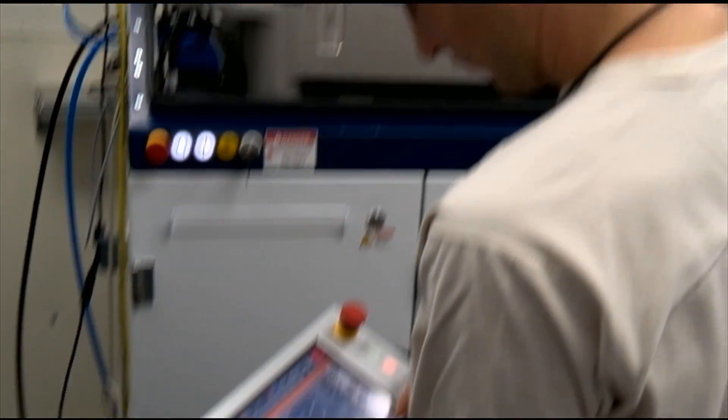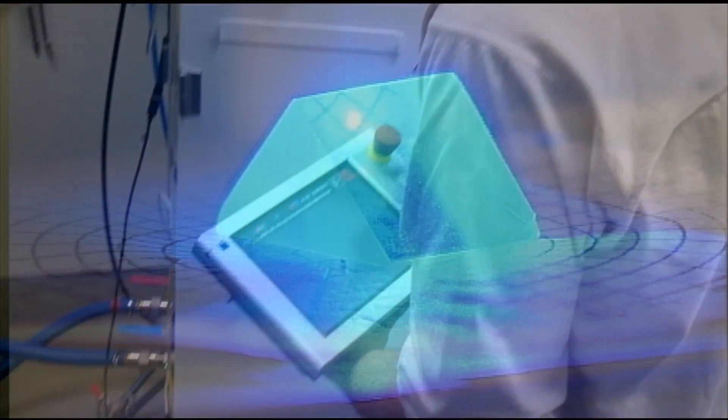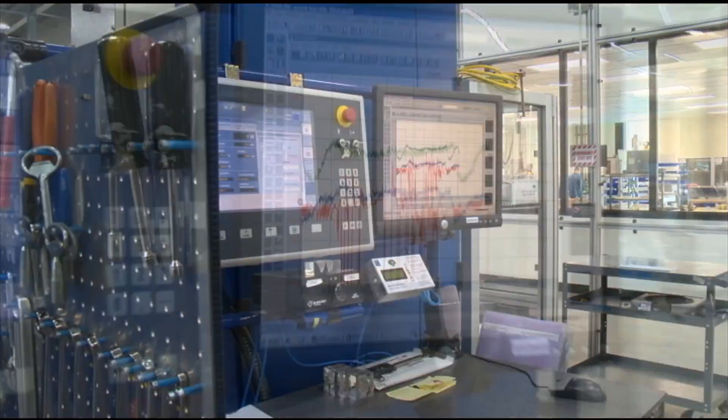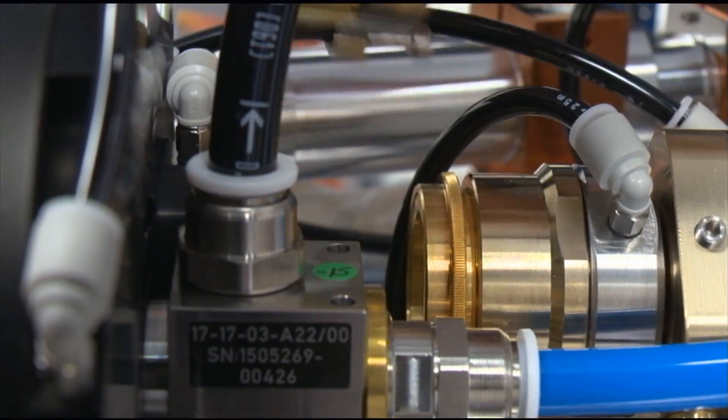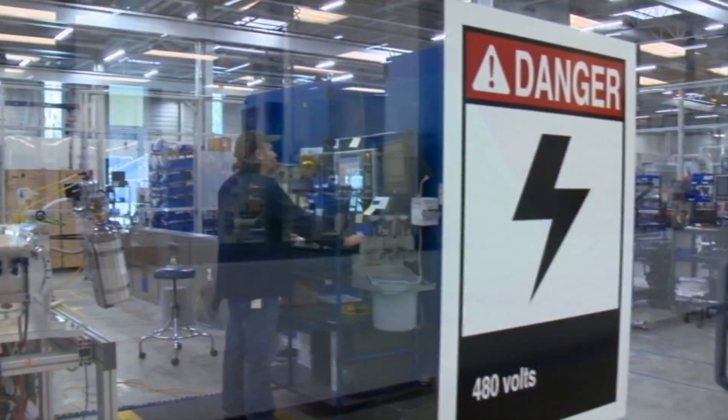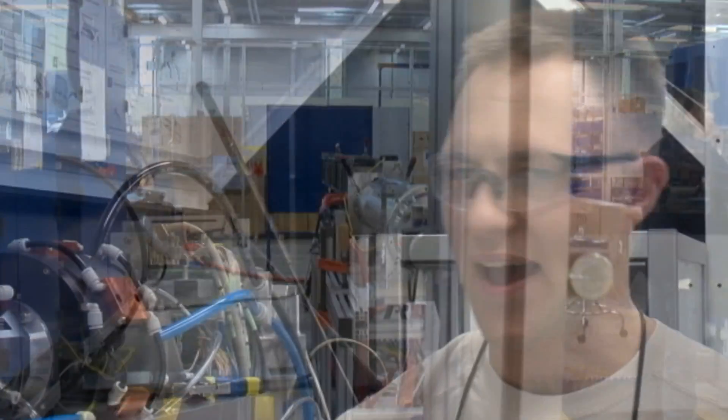What Trumpf does is we take the lasers that we make in this building and we put them onto a machine that has motion units and controls, computers, a lot of exciting technology. And it integrates the laser into this machine so you can put a piece of sheet metal up to half an inch thick, five-eighths inch thick, depending on the metal, and cut through it like butter.